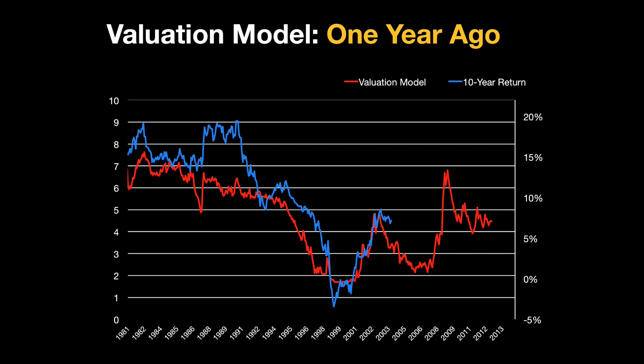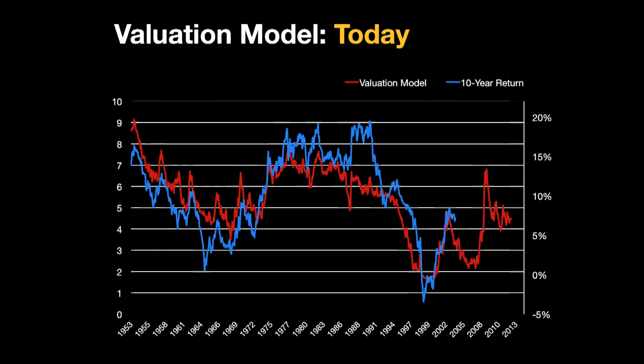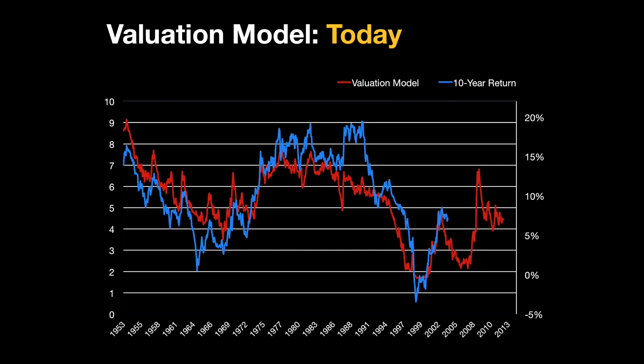Two main things changed with this chart since a year ago. First, we collected additional data going back another 30 years, almost doubling the sample size. We already knew the model was effective at forecasting long-term returns since 1981, but we tested its effectiveness over the prior 30 years as well and found it was very effective, with an R-squared of 74%. R-squared is a statistical measure telling us how much of the variation in S&P 500 returns was explained by the model — 74% is a pretty high percentage.